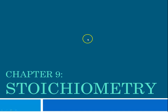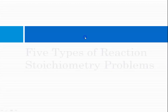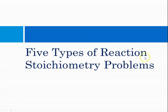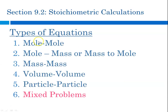Hello class, this is Ms. Augustine. We are still in Chapter 9 doing stoichiometry, and today we're going to try to solve some mixed mole stoichiometry problems. Recall that there are five types of reaction stoichiometry problems, actually six if you count mixed. The problems we've solved so far are mole-mole, mole-mass, mass-mole, mass-mass, volume-volume, particle-particle, and today — mixed problems.